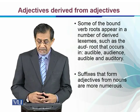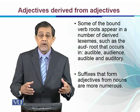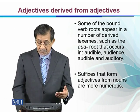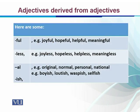Suffixes that form adjectives from nouns are more numerous and more common than adjectives from verbs. For example, -ful added to a noun gives: joyful, hopeful, helpful, and meaningful. Similarly, -less gives: joyless, hopeless, helpless, and meaningless. The suffix -al gives: original, normal, personal, national. And -ish gives: boyish, loutish, waspish, and selfish.